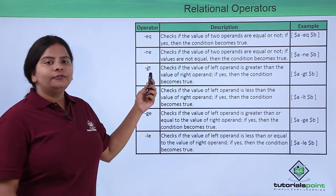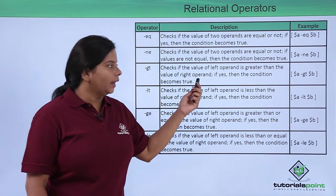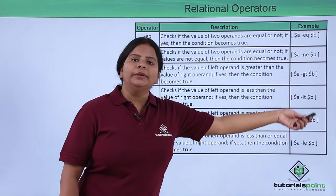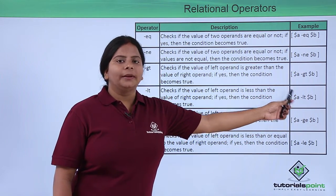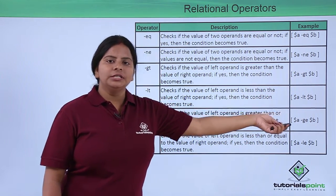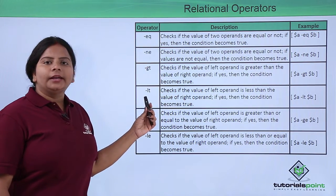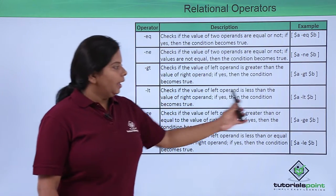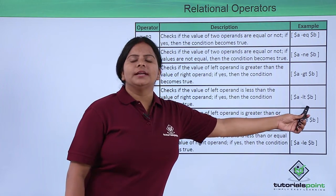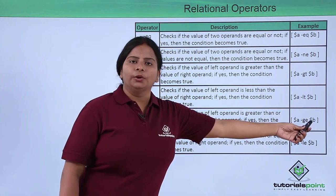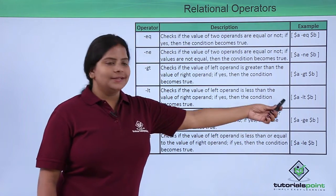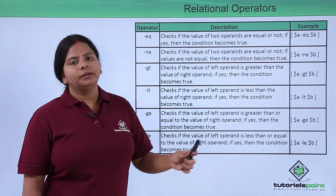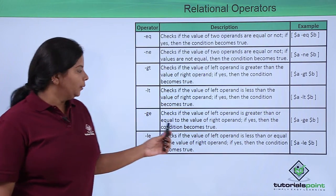Then you have -gt, that is greater than. If I want to check whether a is greater than b, I can use -gt. Same way, I can use -lt for less than — to check whether value a is less than value b. If it is less than b it gives a true value, otherwise a false value.